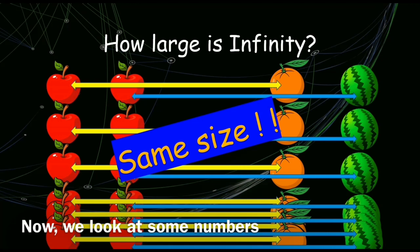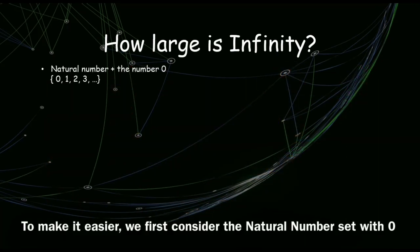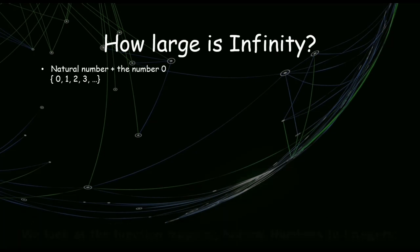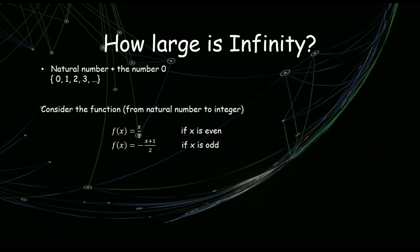Now, we look at some numbers. To make it easier, we first consider the natural number set with the number zero. We look at the function mapping natural numbers to integers. f(x) equals x over 2 if x is even, and negative (x plus 1) over 2 when x is odd.